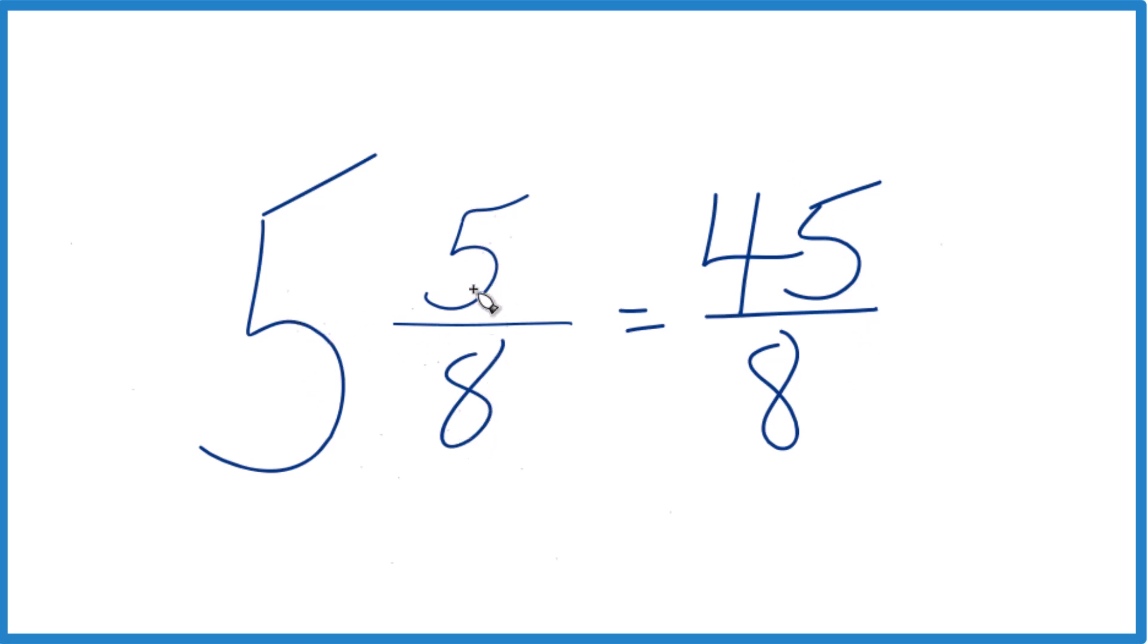5 times 8 is 40. 40 plus 5, 45. That's the numerator. Bring the denominator across, and we have our 8 here.